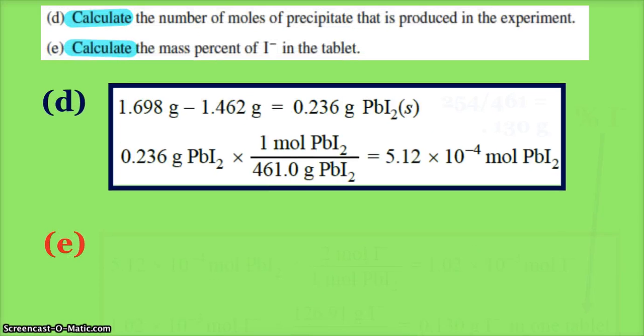Now the question says calculate the moles, so now I have to switch that to moles using the molar mass of my lead(II) iodide: 5.12 × 10⁻⁴ moles. Probably a good place for a sig fig check. When we subtract these two numbers to the thousandth, we should get an answer to the thousandth, and then our moles—we should have three numbers in our mole calculation.